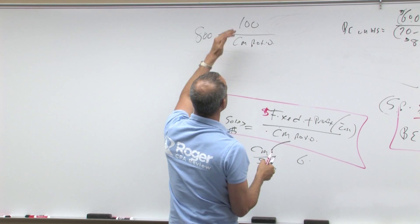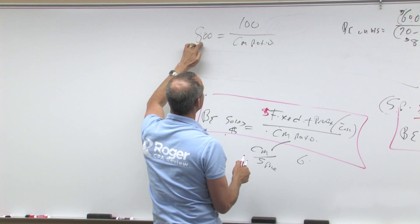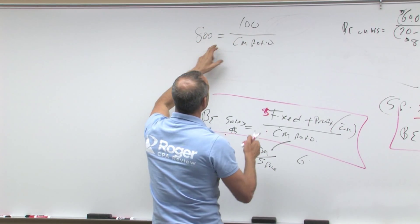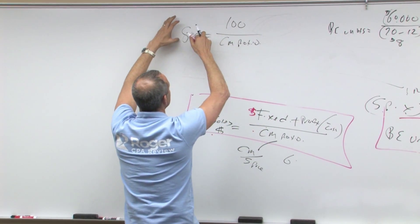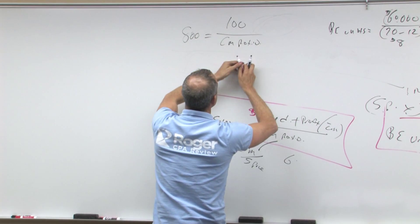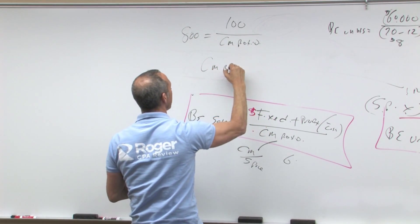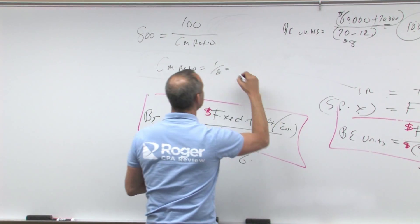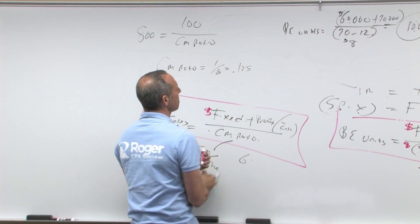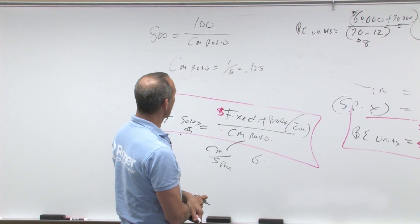So what that tells us is one over something is 800, or if we multiply this by CM ratio, that goes here, divide this by 800, that goes here. So CM ratio is one over eight, which equals something like 0.125, 12.5%, okay?